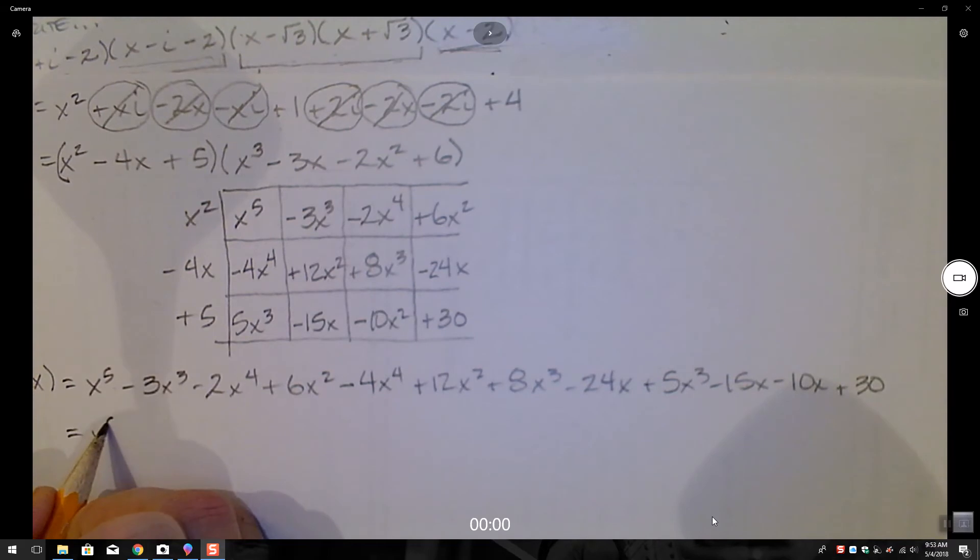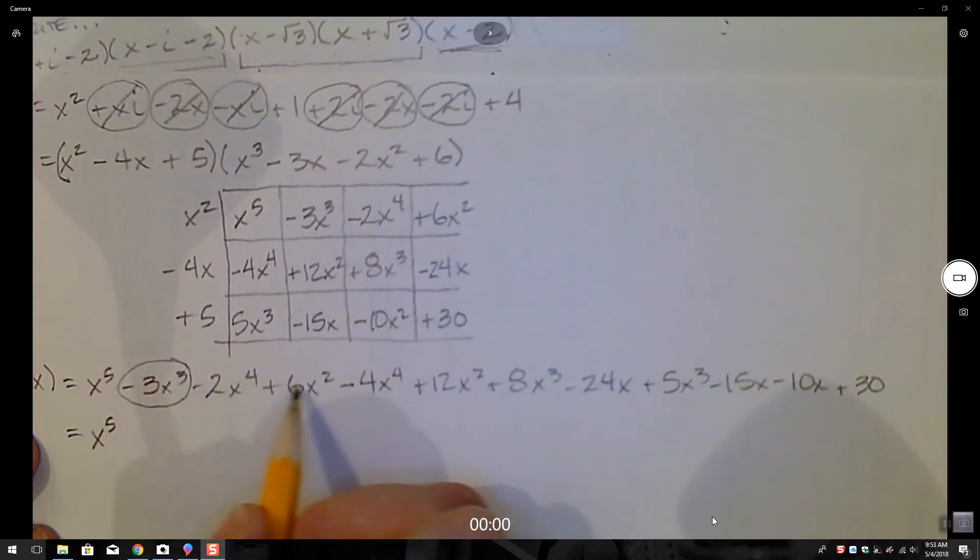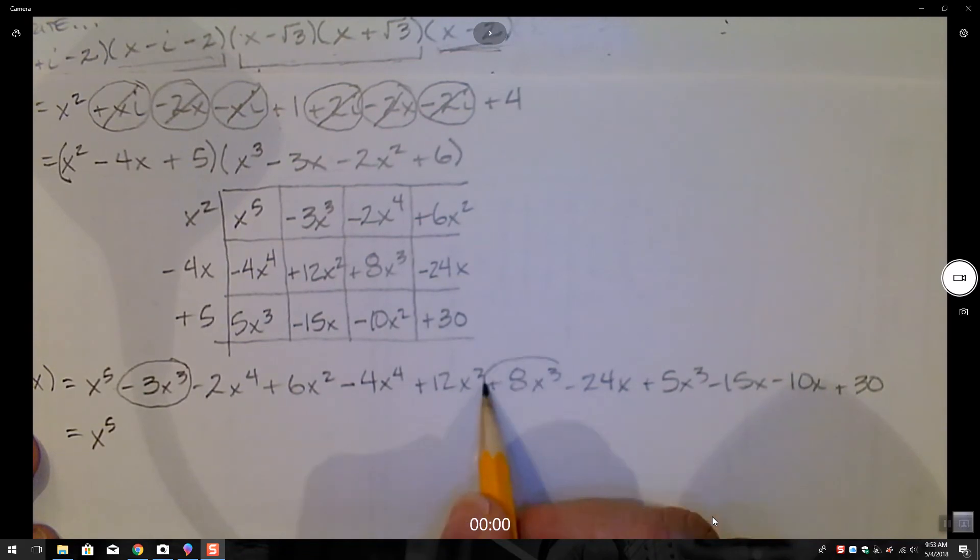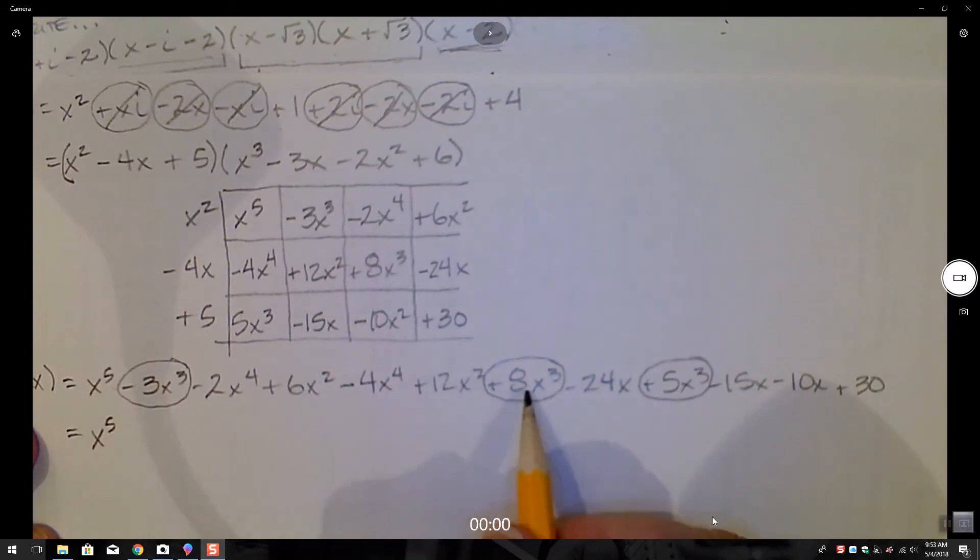We know we don't have another x to the fifth. What about x to the third though? There's one. There's one. And that's it. So minus 3 plus 8 is 5. Plus 5 is 10. 10x to the third. Let's see.